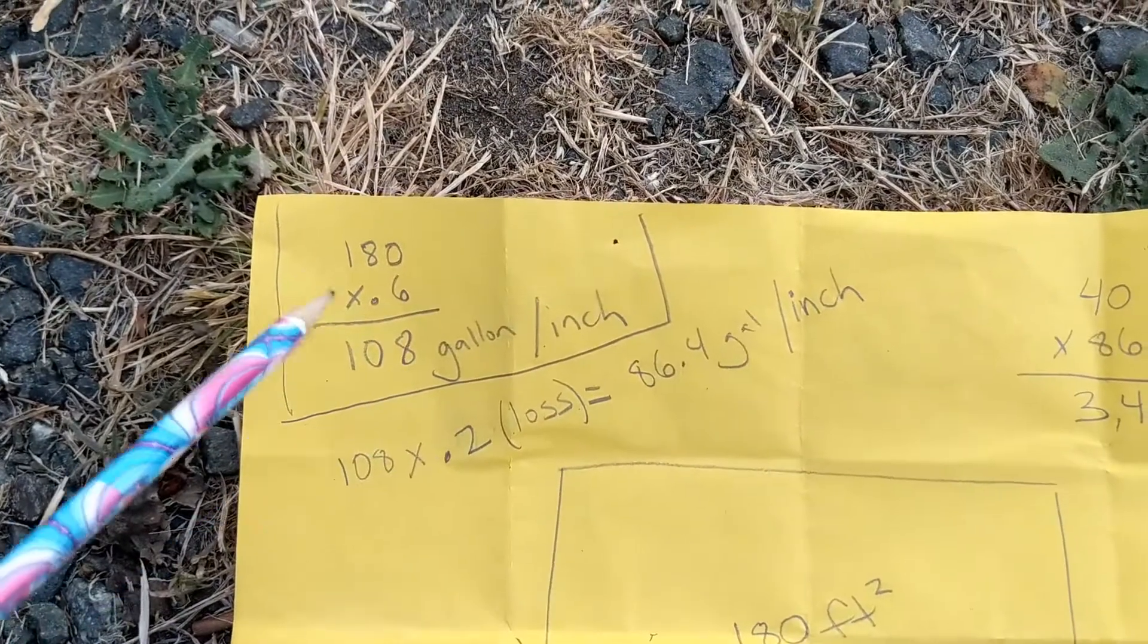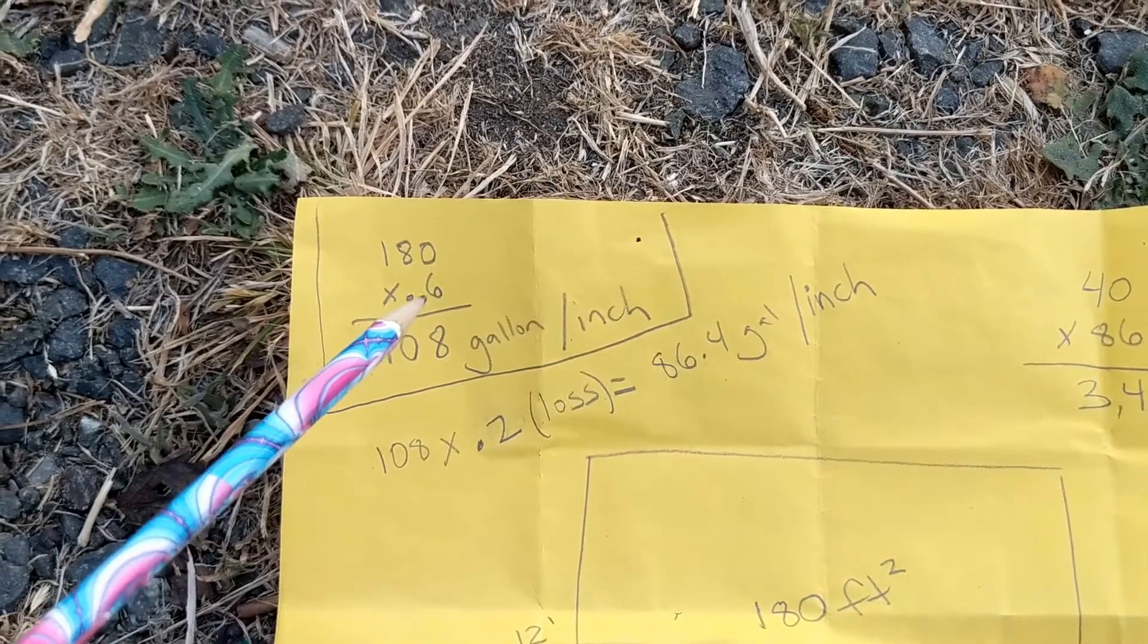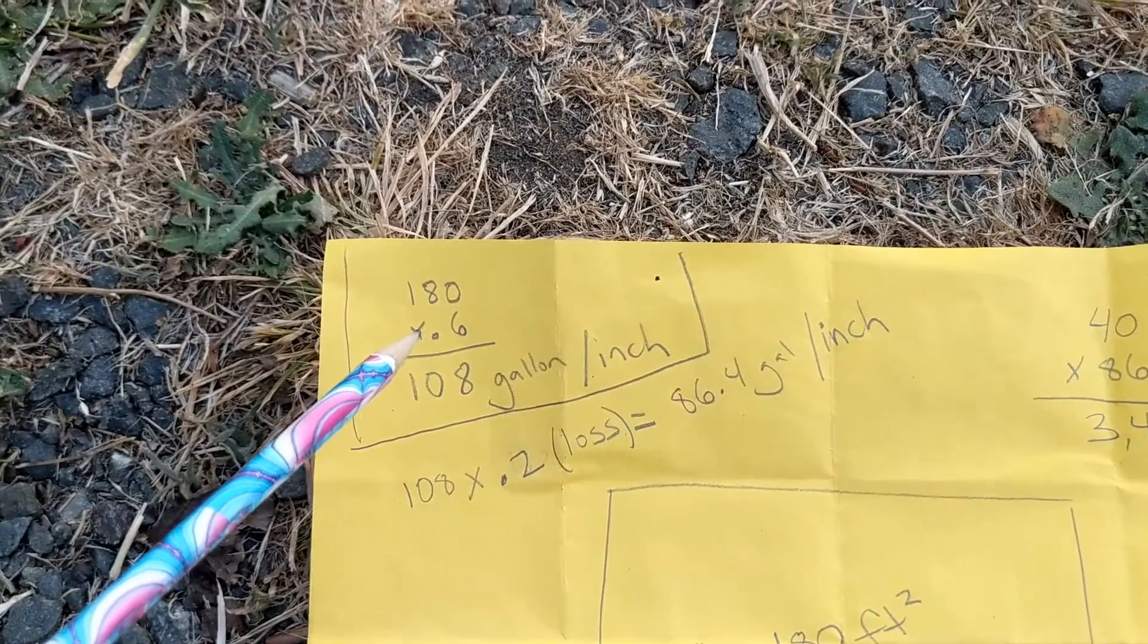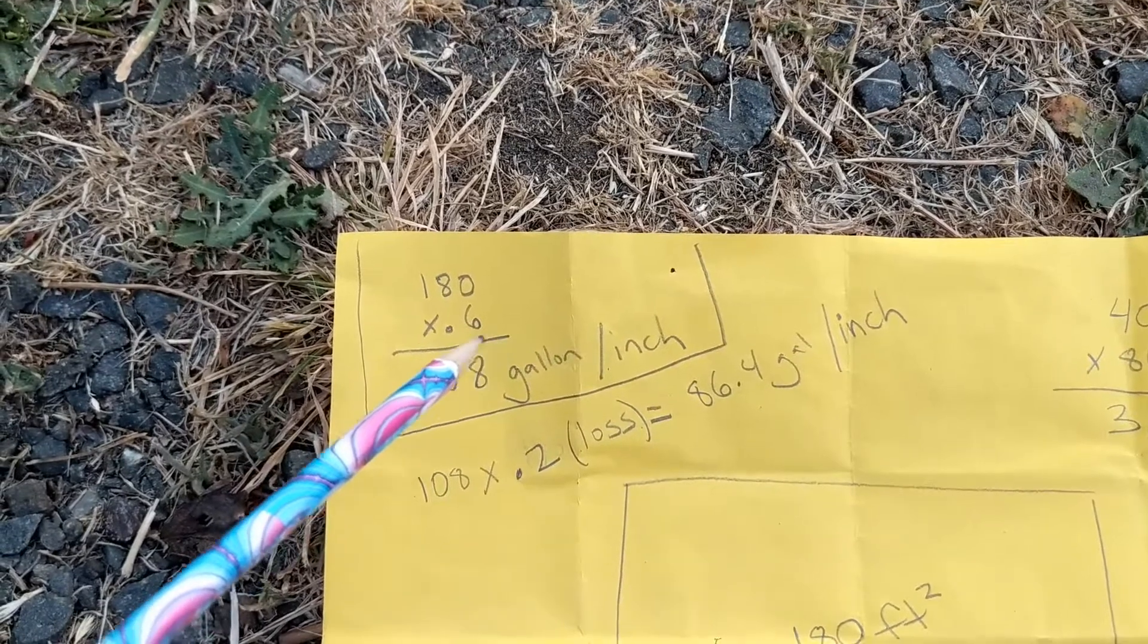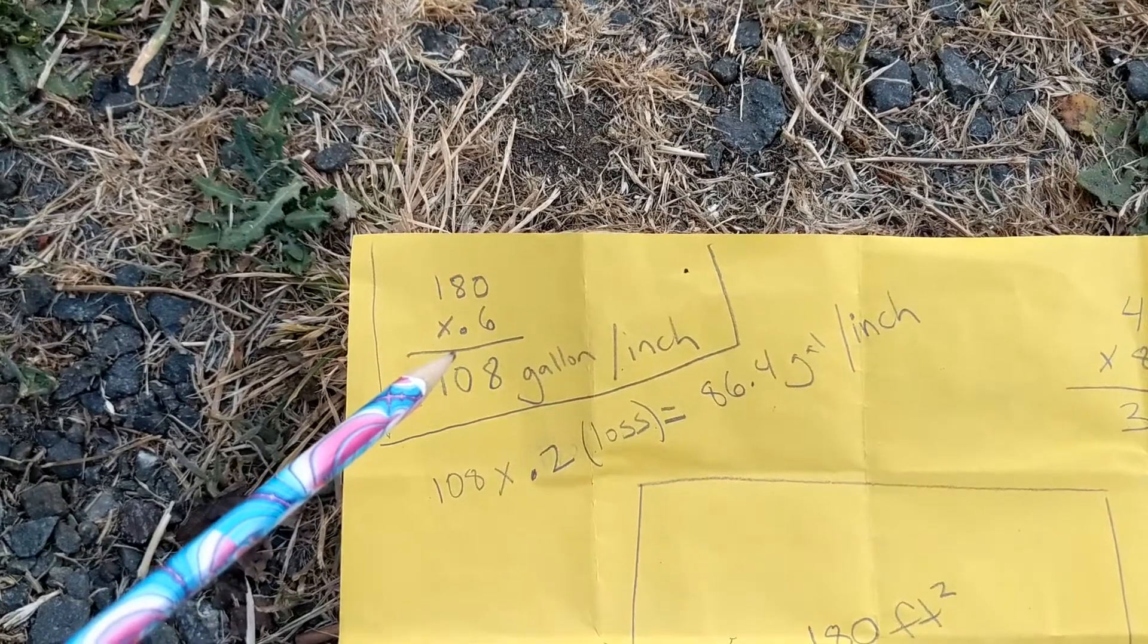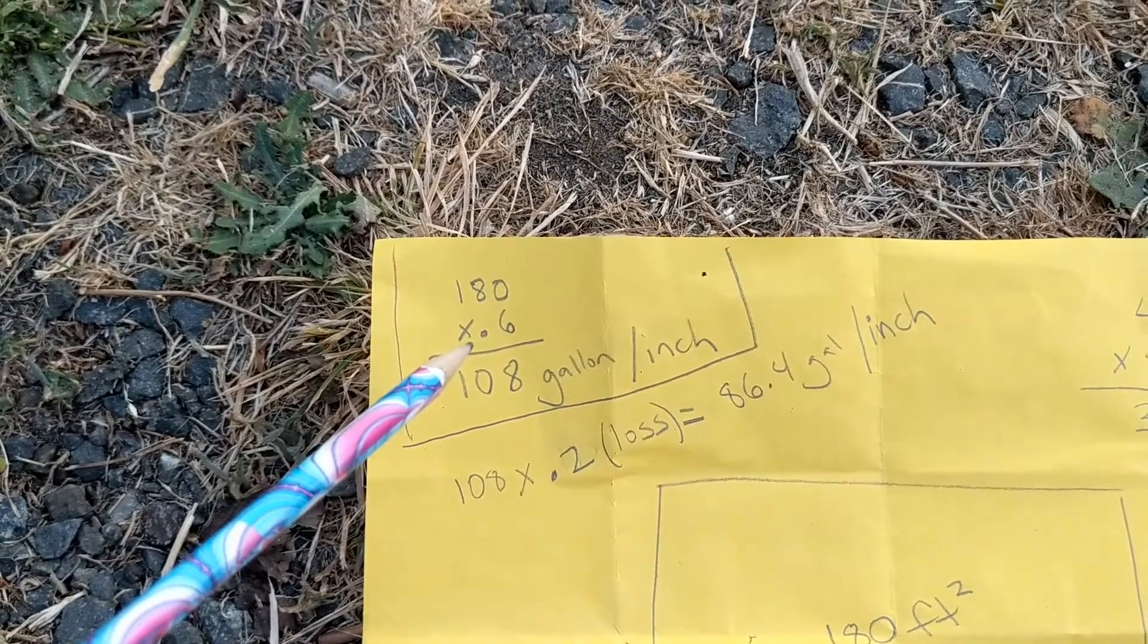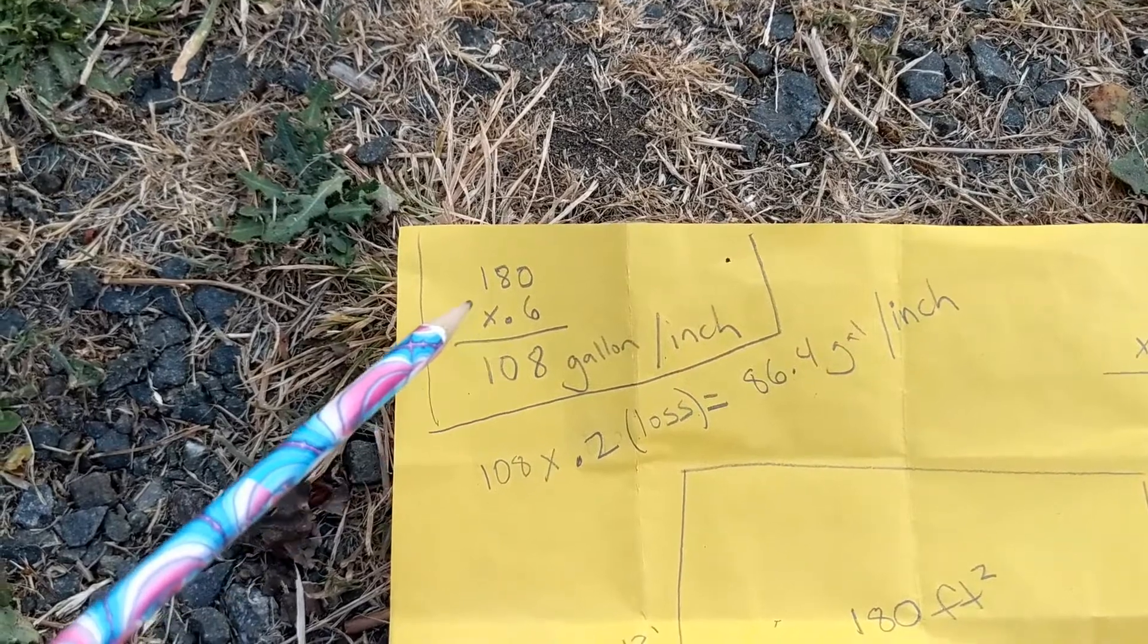So then we multiplied that 180 square feet by 0.6. Luego multiplicamos estos 180 pies cuadrados por 0.6. We use 0.6 because on every square foot of roof you can collect 0.6 gallons per inch of rain. Y utilizamos este 0.6 porque por cada pulgada del techo uno puede recolectar 0.6 gallons de agua.